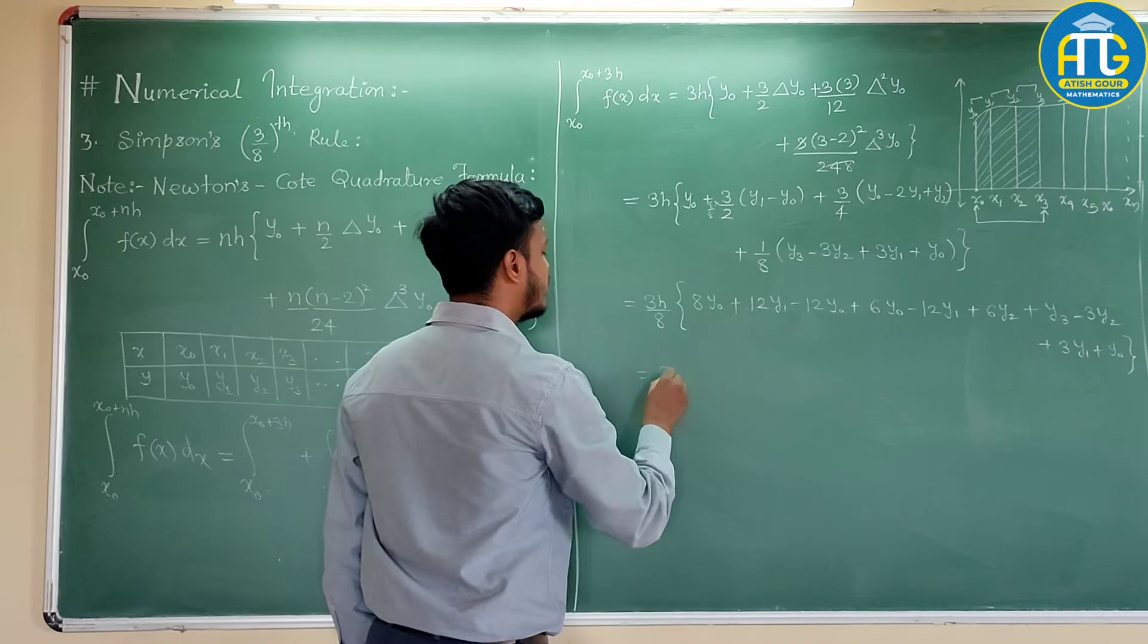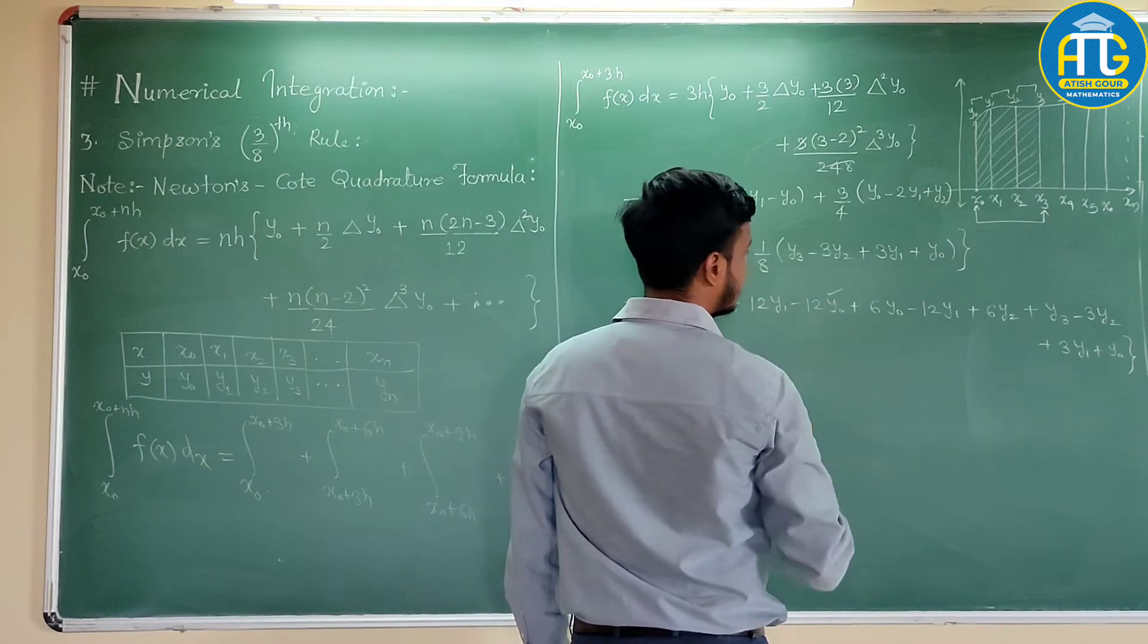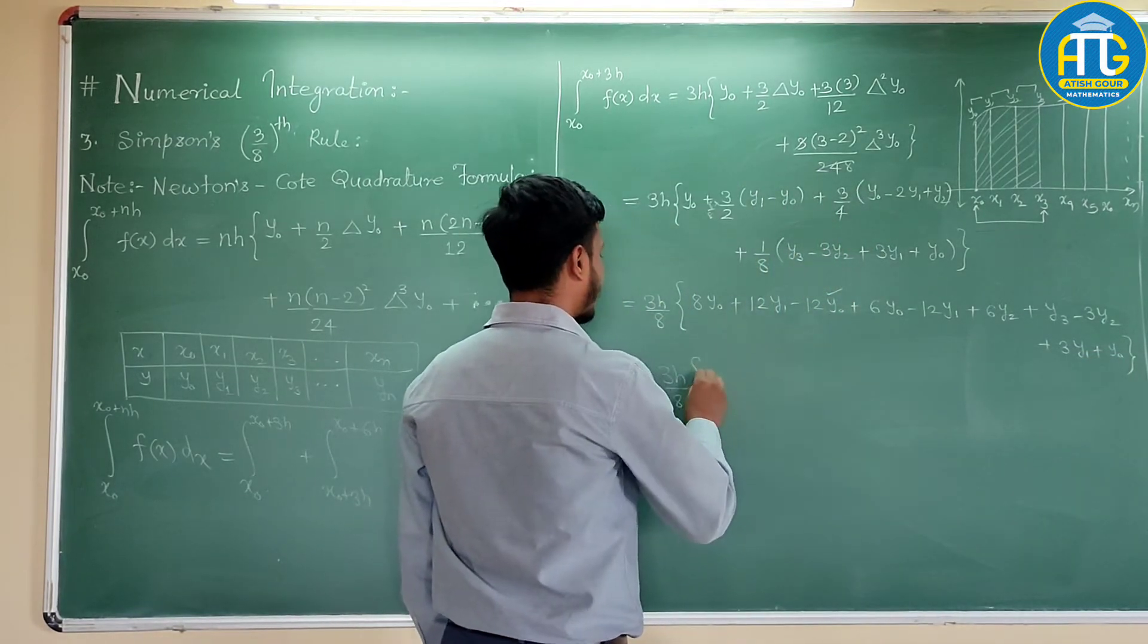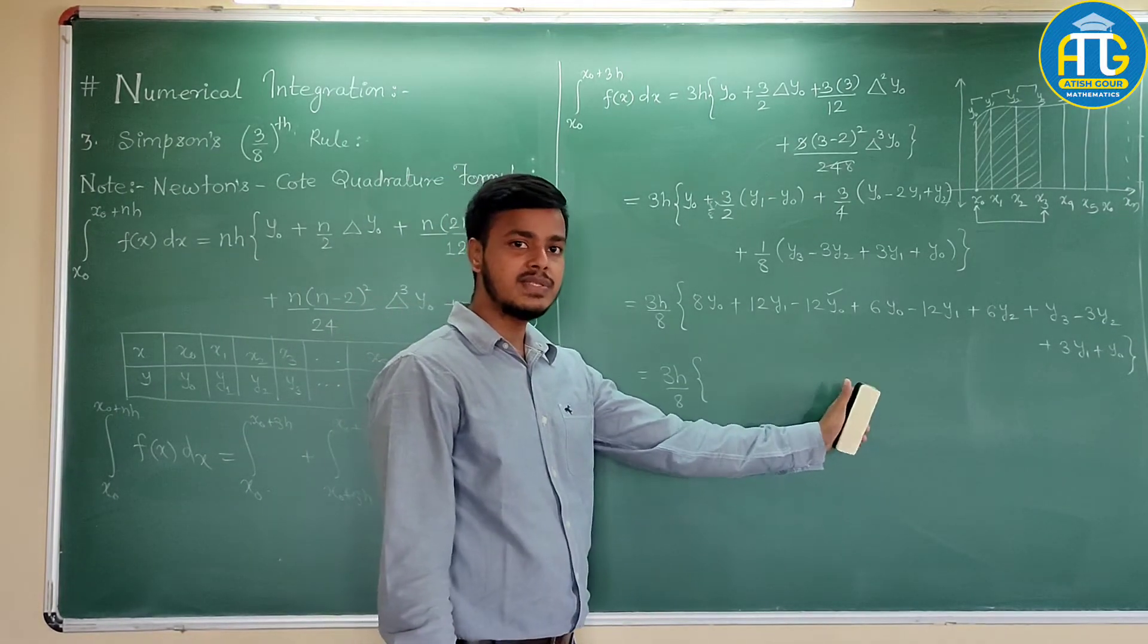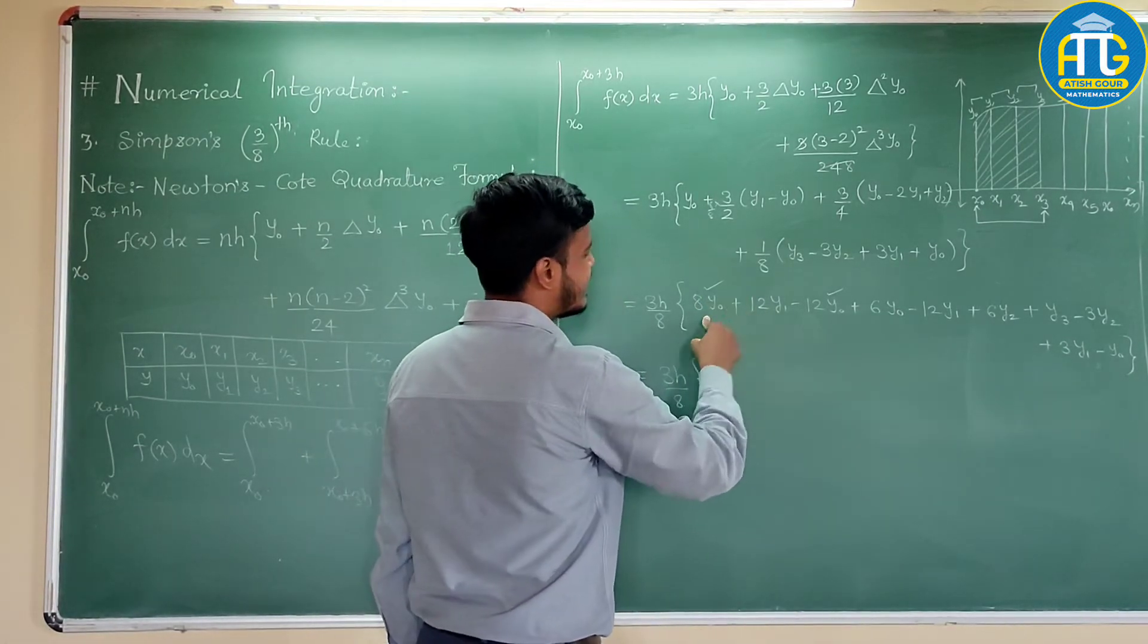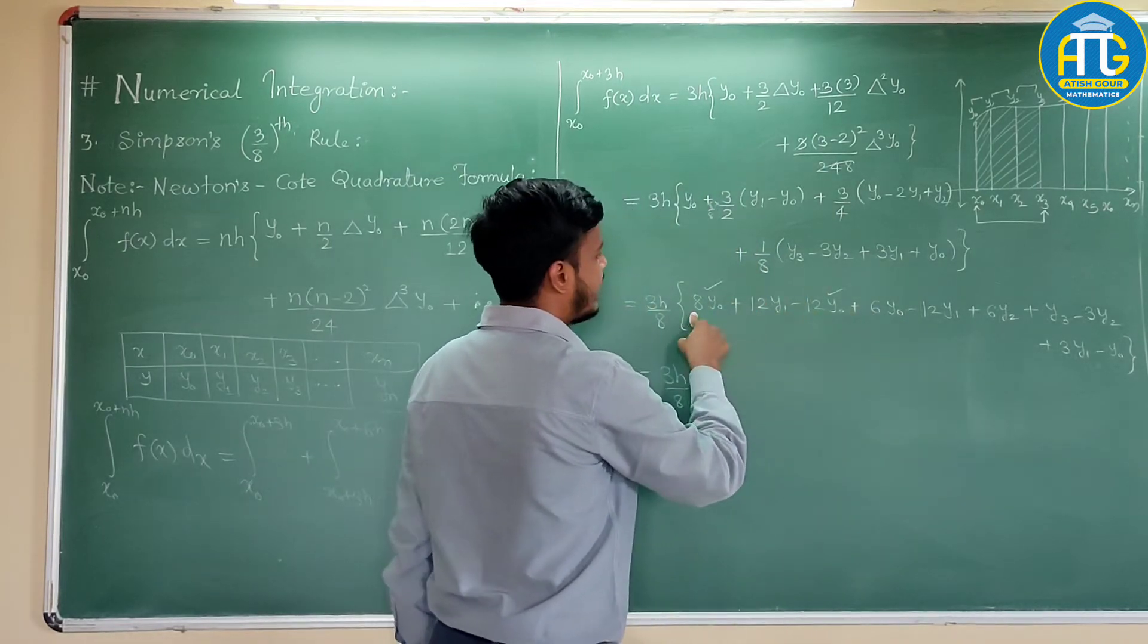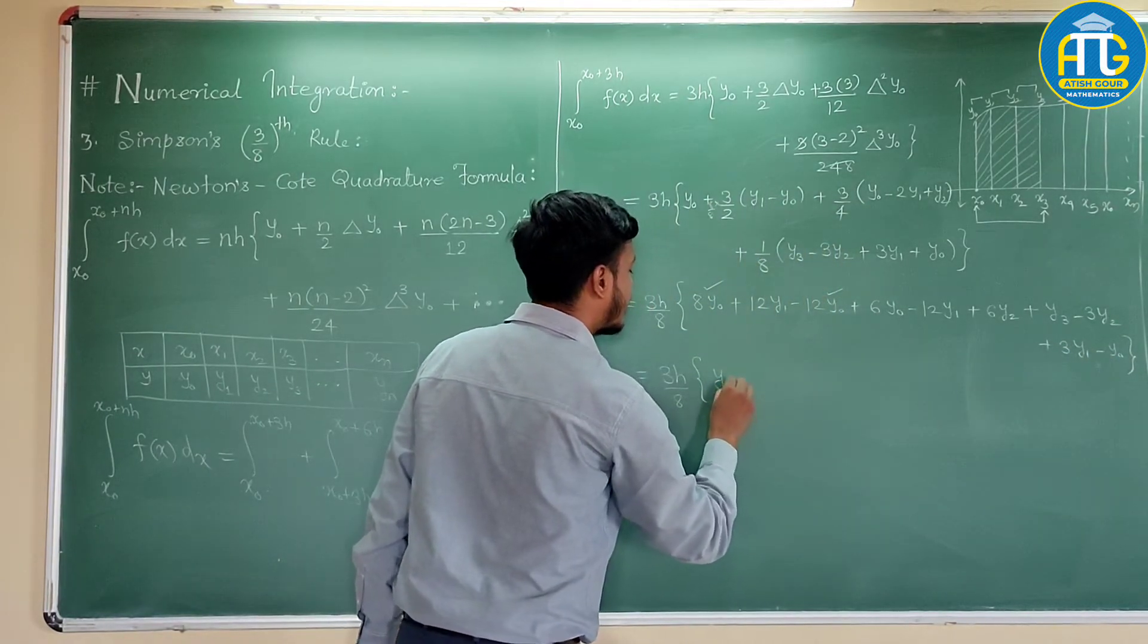Now you collect all the terms, you would be getting 3h by 8, what are the y0 terms? Minus 12, then plus 6 plus 8, 14, and here it is y0. So try to do this and resume the video. So I hope you might have found out this. So this is y0, 8 minus 12 is minus 4 plus 6. That 8 minus 12 is minus 4 plus 6 plus 1, that's 1. So we got y0.